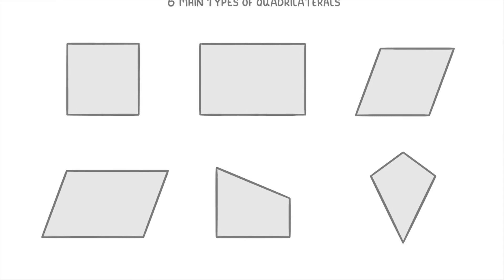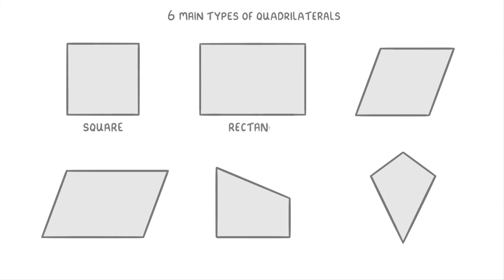In today's video we're going to look at the six main types of quadrilaterals: the square, rectangle, rhombus, parallelogram, trapezium, and kite. We're going to go through each of these one by one and explain all the stuff that you need to know about them. Something to point out is that we're going to be using the British naming system, so if you're overseas a couple of these might be a bit different.